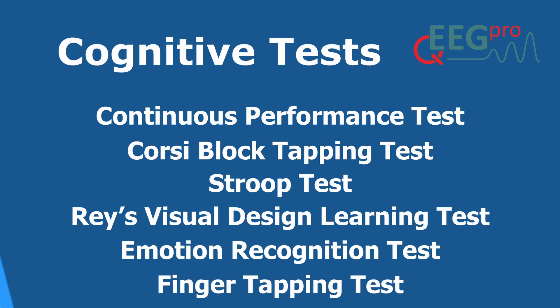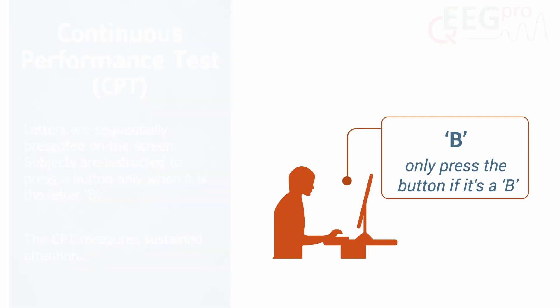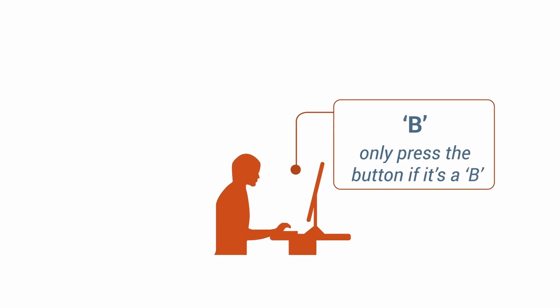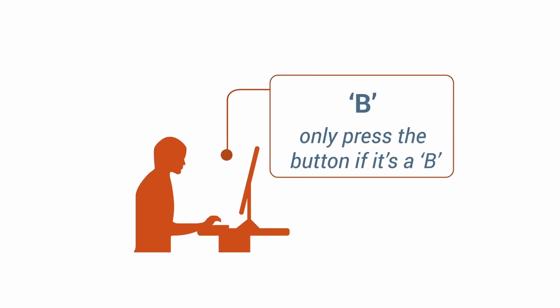Let's start with the Continuous Performance Test, or CPT for short. In the CPT, letters are sequentially presented on the screen with a pace of about one letter per second. Subjects are instructed to tap a button as quickly as they can when the letter B appears, but they have to refrain from responding to any other letter. The CPT measures sustained attention and is often used for diagnosing attention disorders.